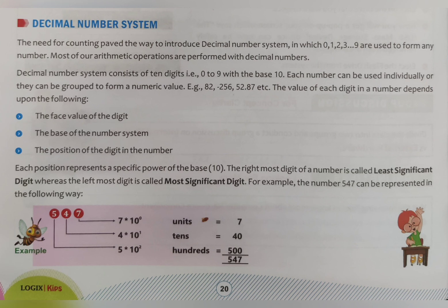We can represent 547 as follows: 7 × 10 to the power 0 equals 7 × 1 = 7; then 4 × 10 to the power 1 means 10, so 4 × 10 = 40; and 5 × 10 to the power 2 means 500. The total is 547. So 547 is expressed in the decimal number system.